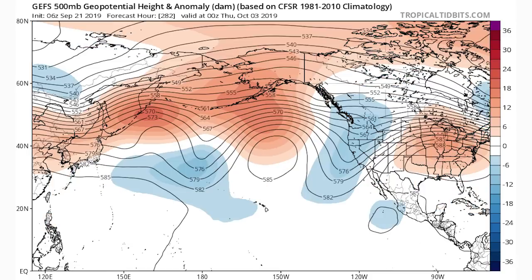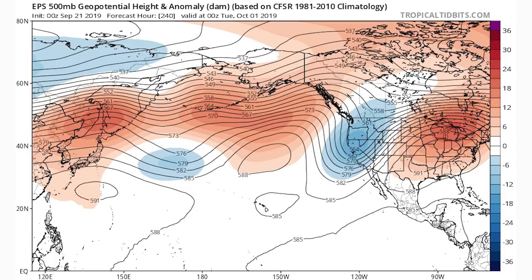Here's the GEFS — the ensemble GFS model — for October 3rd. We still have a very big ridge for Alaska, then a big trough for the western United States and Canada, and then a big ridge for the eastern United States. I wanted to show the three big ensemble models and spot the differences. I found this incredible — the amount of agreement at 240 hours is just remarkable. First, here is the European ensemble model: very classic negative PNA look, big-time ridge and high heights for the Aleutian Islands and areas in Alaska, a big-time trough for the western United States, and a massive ridge for the eastern and central United States.